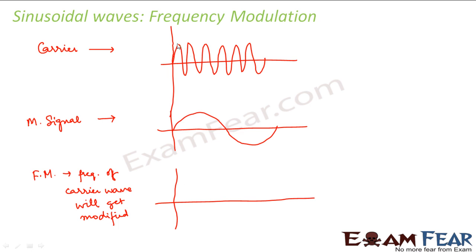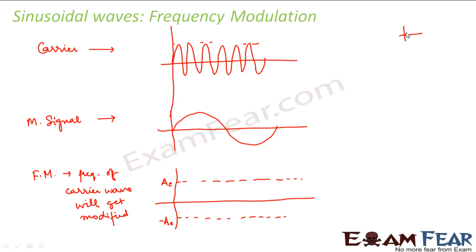The amplitude remains the same — this is Ac on one side and minus Ac on the other. The frequency will vary. When we say high frequency, the waves are very close together; when we say low frequency, they are far apart. That is how we understand whether the frequency is high or low.